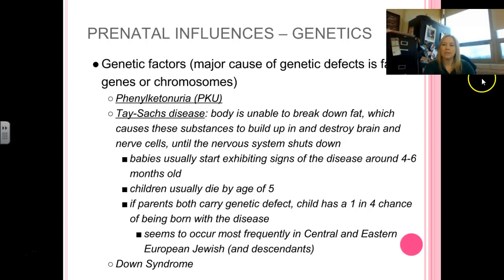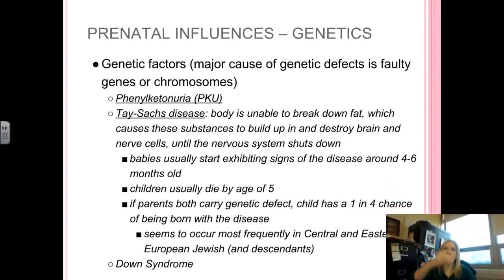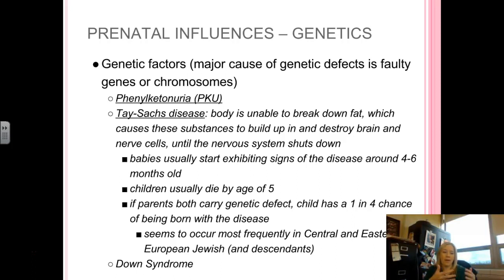It's important to recognize that nurturing happens in the womb. There are certain things that mothers have to be very mindful of when it comes to fetal development. Genetic factors can play a role, specifically something called phenylketonuria, which is a genetic defect that occurs when genes and chromosomes don't combine the right way. There is also Tay-Sachs disease, where the body does not have the capacity to break down fat. Those substances build up in the fetus's body and destroy the brain and nerve cells, shutting down the nervous system. Babies born with this exhibit signs around 4 to 6 months and usually die by age 5.